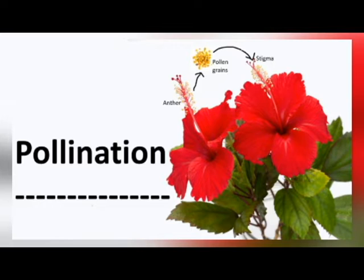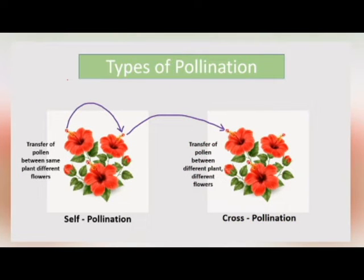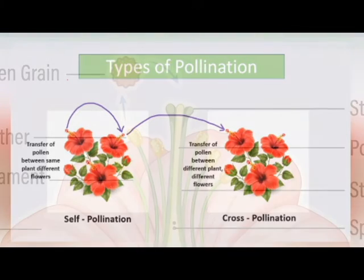There are two types of pollination: self-pollination and cross-pollination. Self-pollination is also called autogamy, and cross-pollination is also called allogamy.